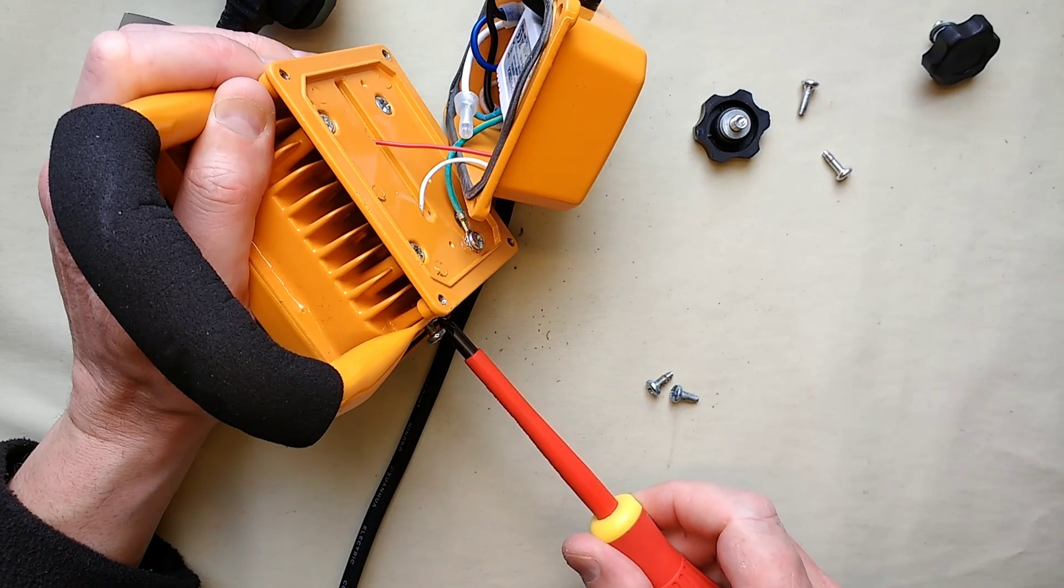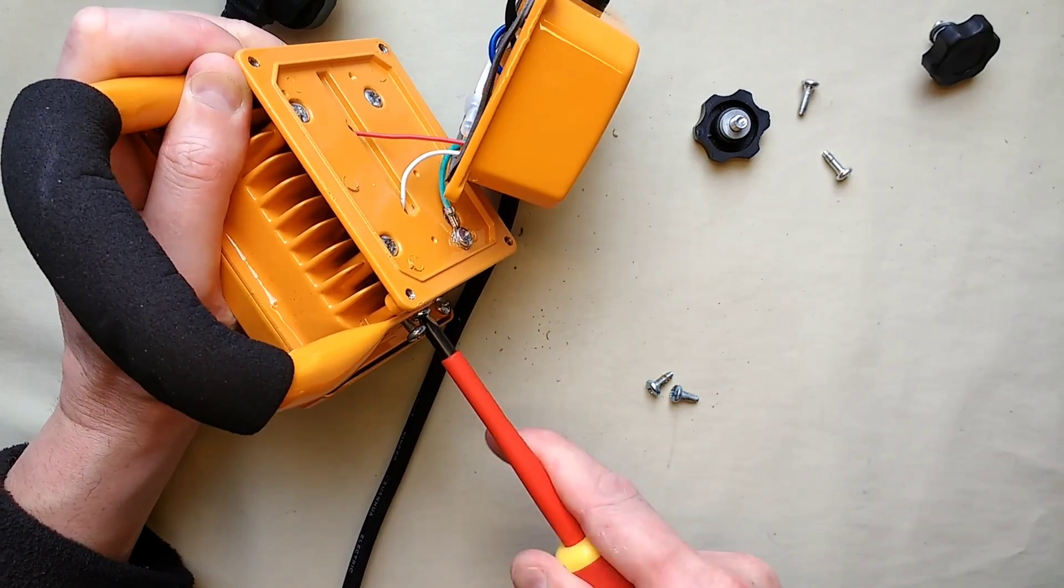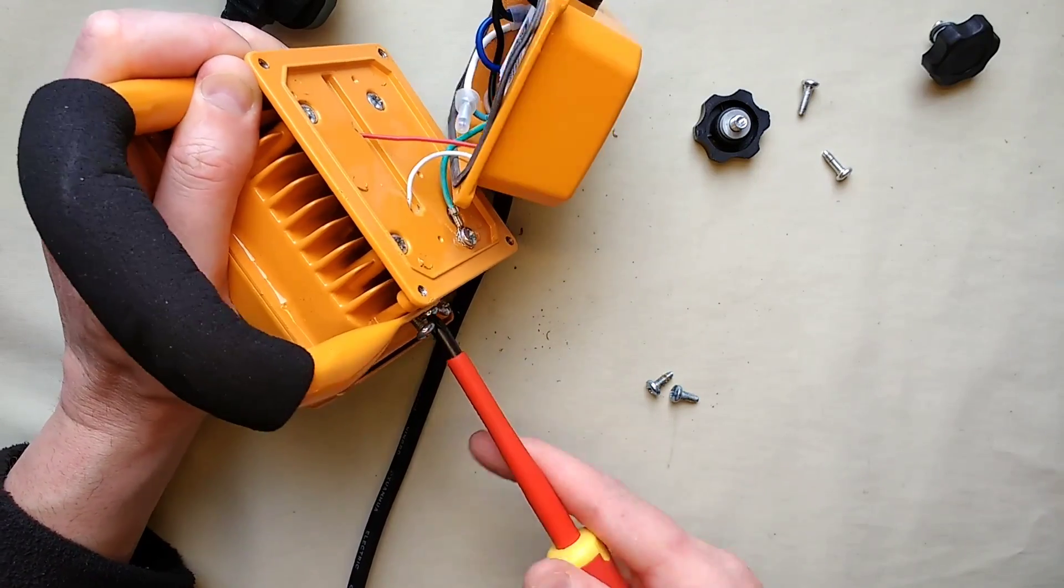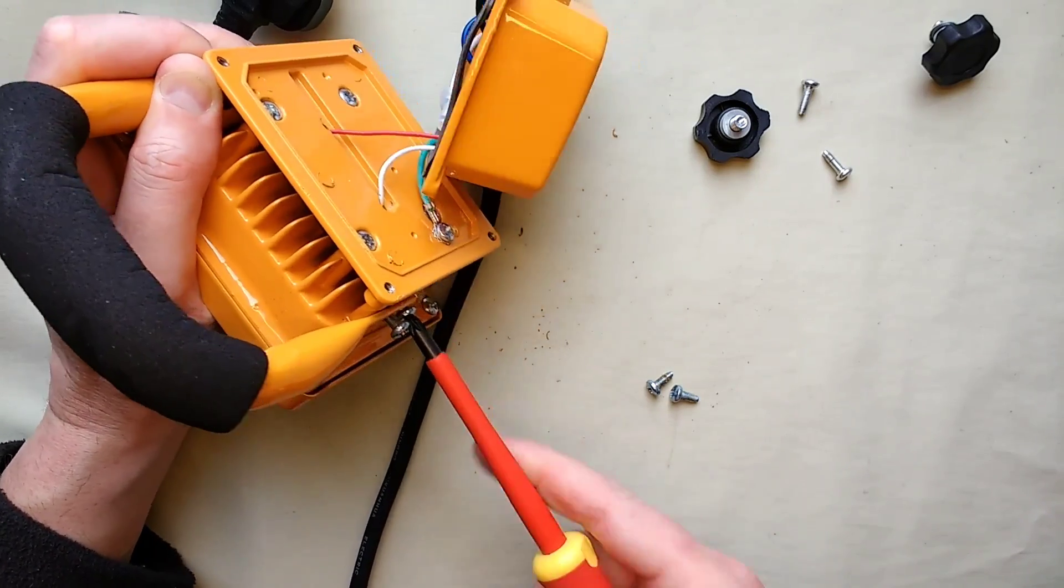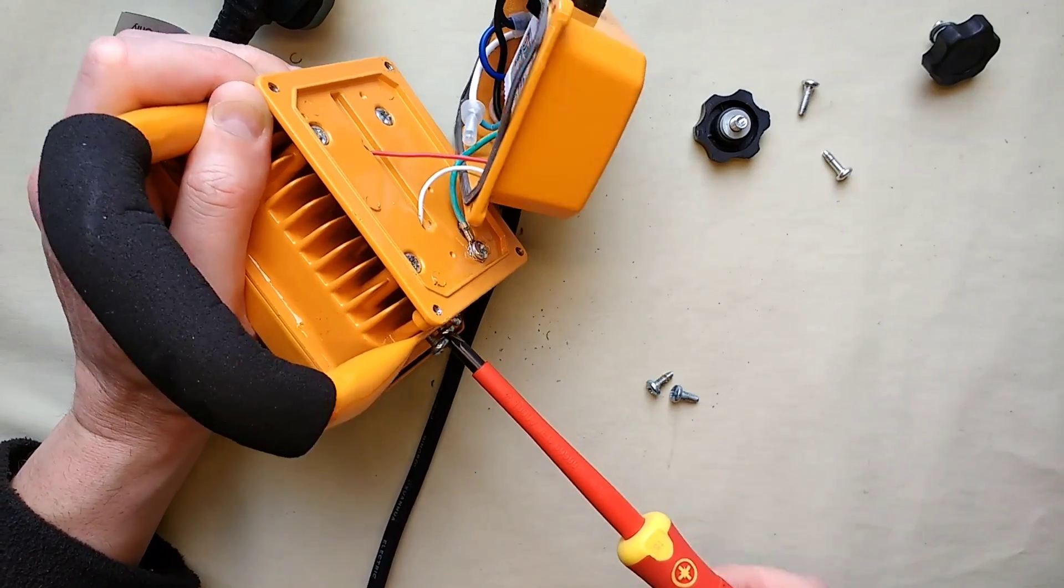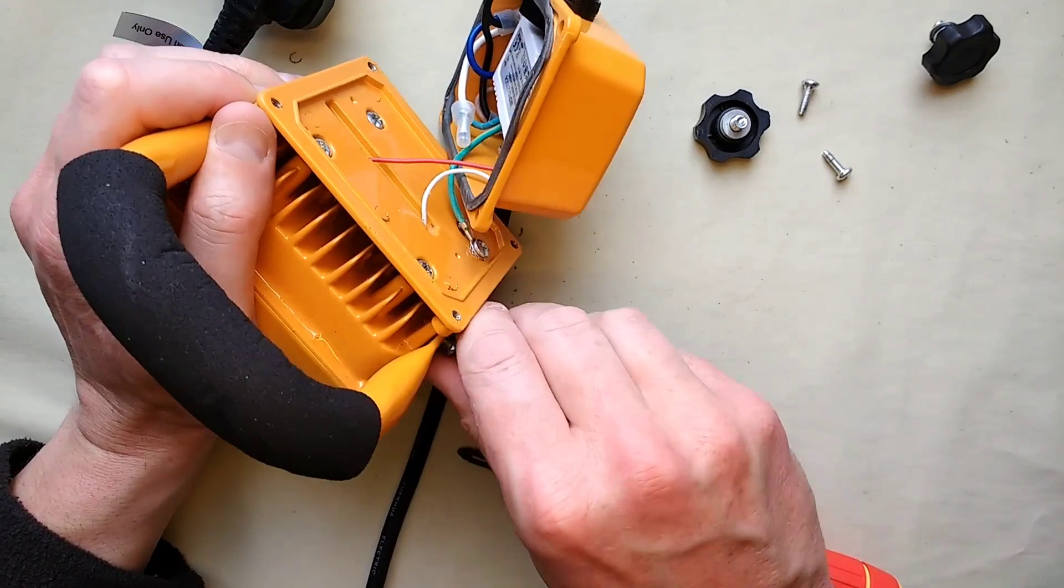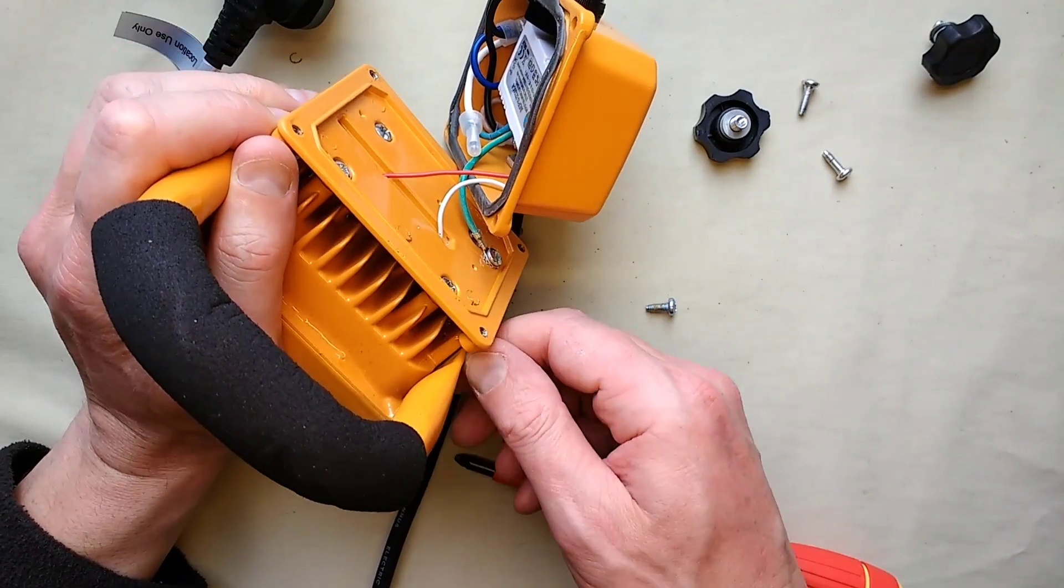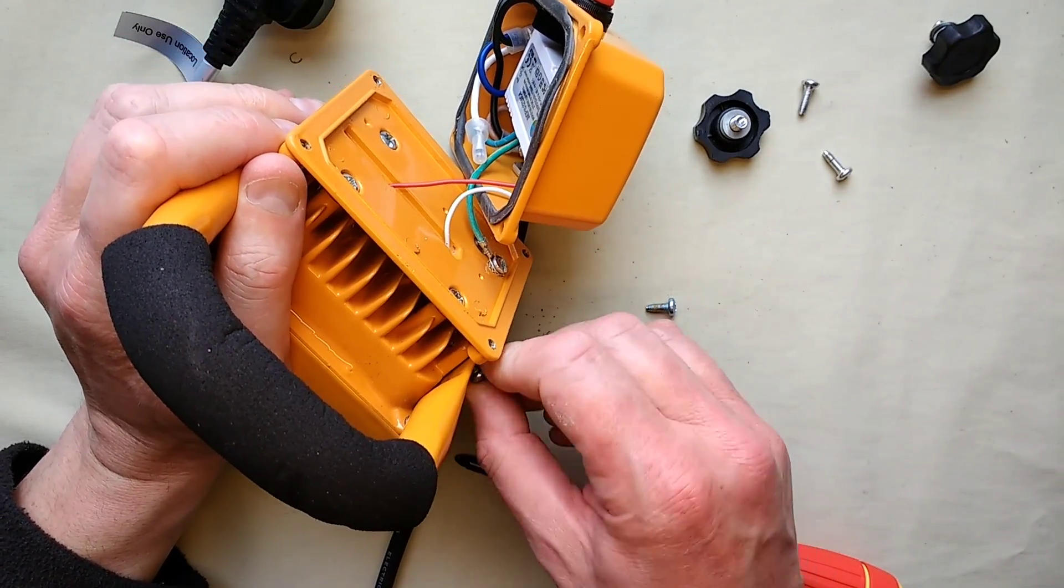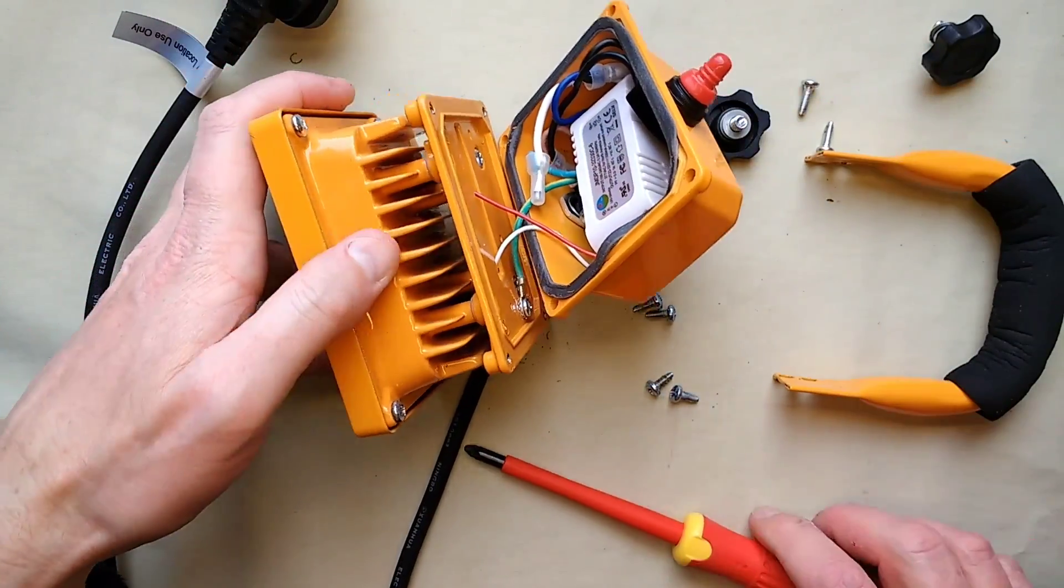Let's get this handle off for a start. The flex alone is a refreshing change from the little stub of PVC flex that usually comes out. I was kind of expecting one of the little potted modules in there but it's not, it's a little plastic module. We'll pop that open as well afterwards and take a look inside it.